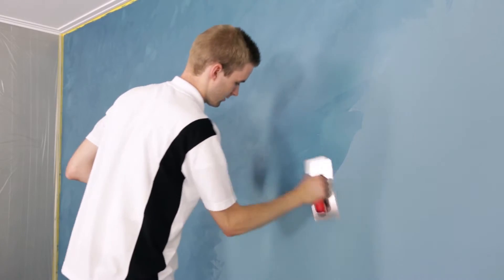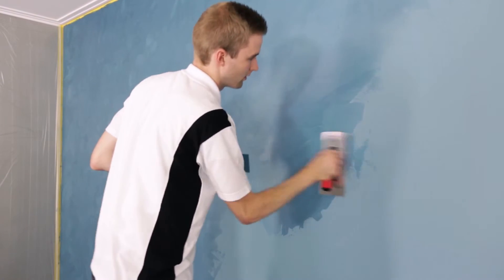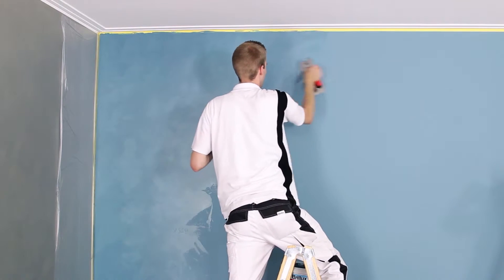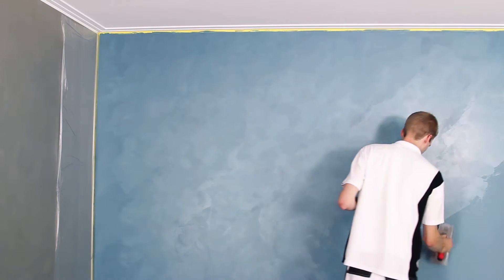It must then be re-smoothed immediately in a criss-cross pattern to remove burrs. While doing this, it's important to ensure that only slight pressure is applied and that the trowel edge is as flat as possible.